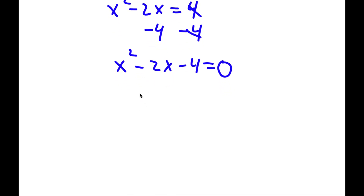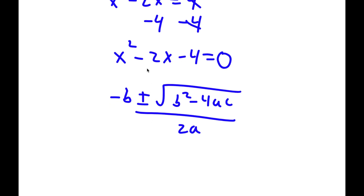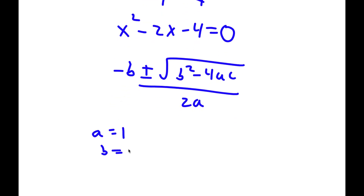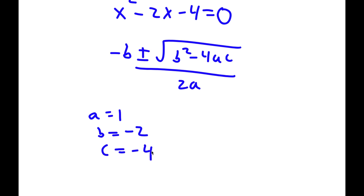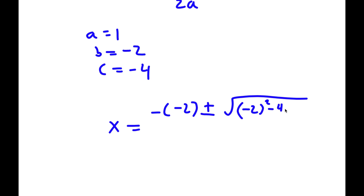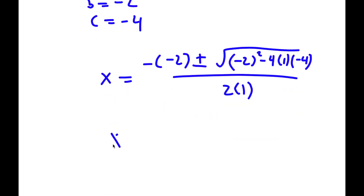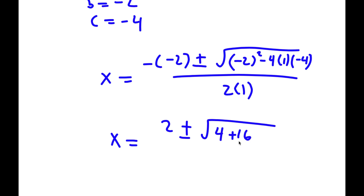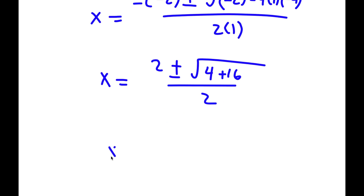To solve this I'll use the quadratic formula: negative b plus or minus the square root of b squared minus 4ac, all over 2a. Here a is 1, b is negative 2, and c is negative 4. So x equals 2 plus or minus the square root of (4 plus 16) over 2, which is 2 plus or minus the square root of 20 over 2.